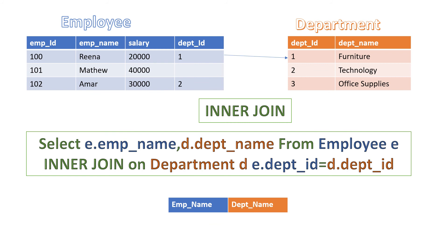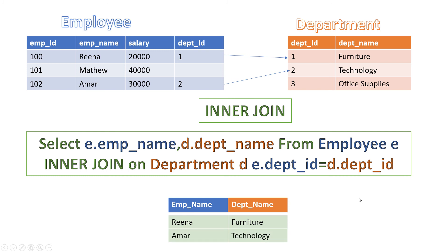Department ID 1 in the employee table matches with department ID 1 in the department table, and similarly department ID 2 matches with department ID 2 in the department table. I hope you understand how inner join works in SQL. Thanks for watching — please do subscribe to my channel.